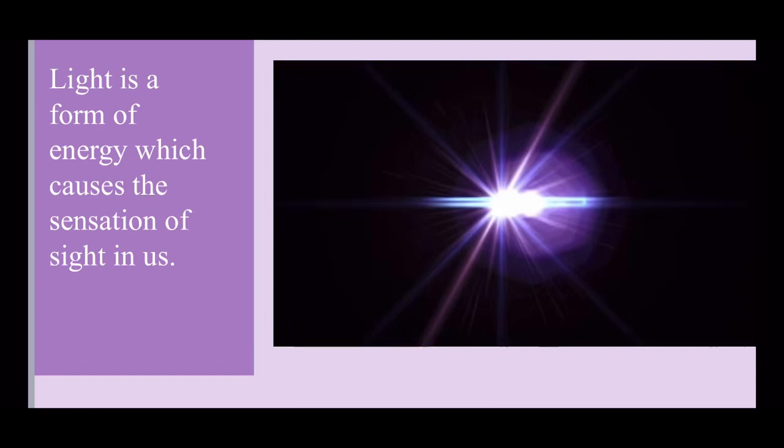When we switch on a bulb in a room, everything is visible to us. The bulb gives out light rays in different directions. And when these light rays fall on the objects in the room, they bounce back from the surface of the objects and get reflected.